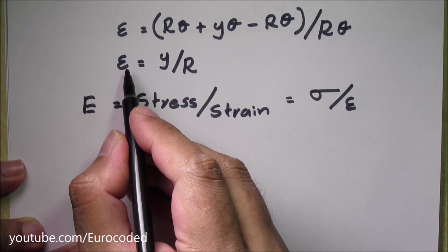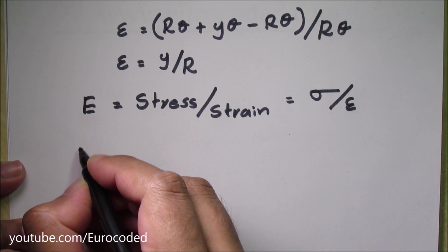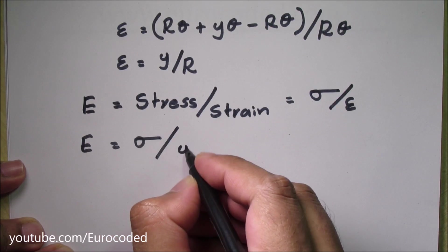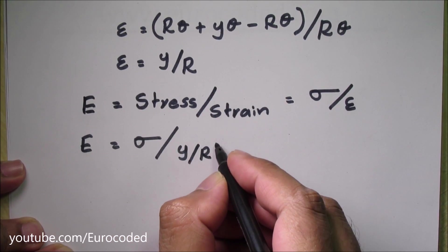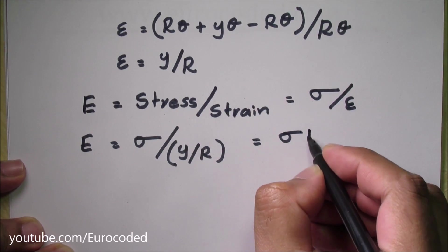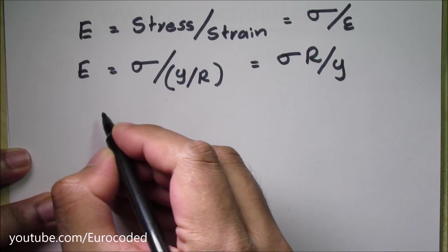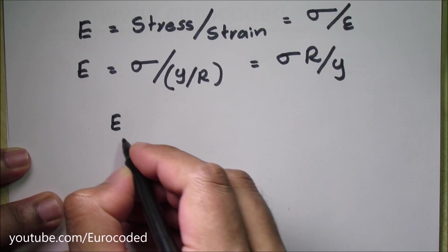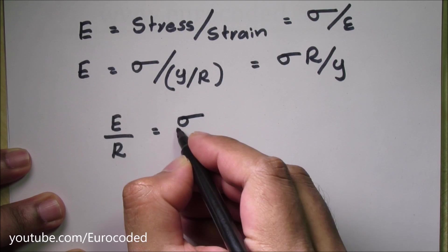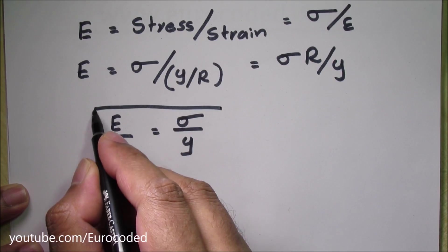We have already developed an expression for strain here for our beam. Then we can write E is equal to sigma over Y over R. We can rearrange this equation and we can write E over R is equal to sigma over Y. This is the common form this equation is expressed.